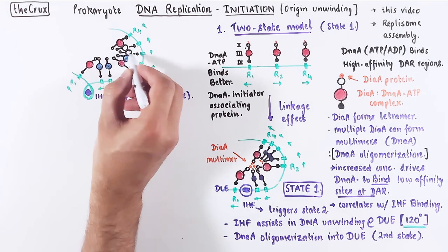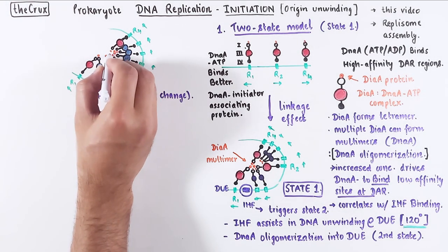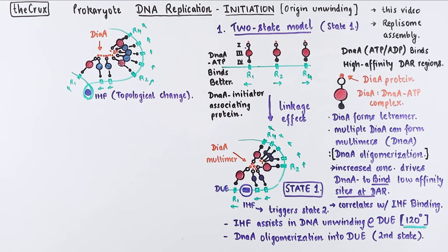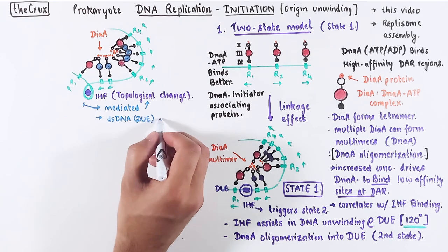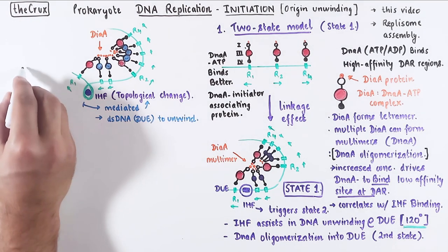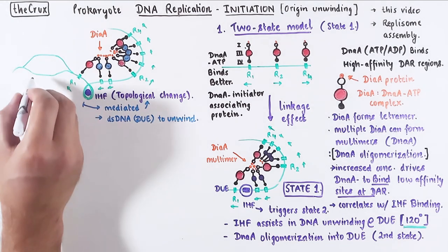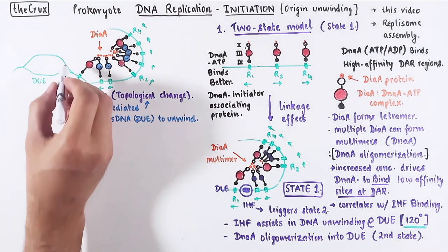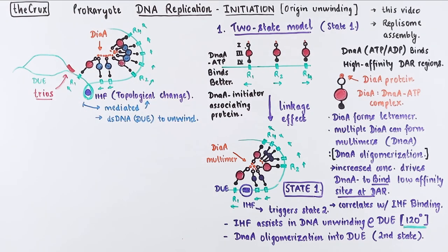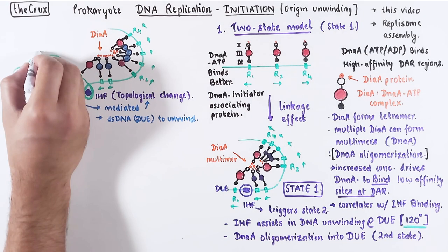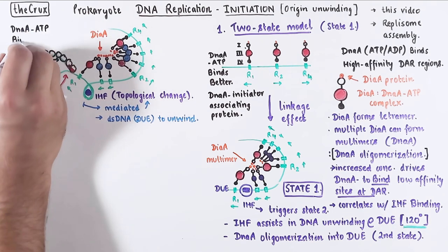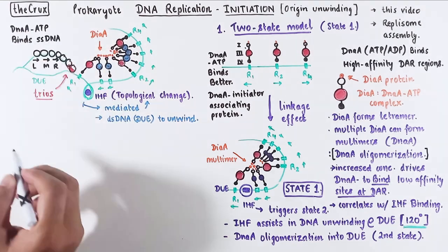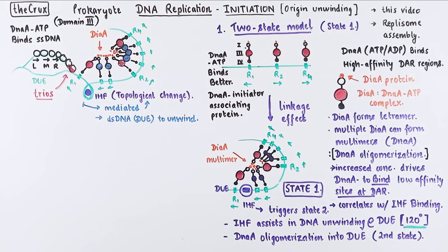Because DAR is stably bound by DnaA proteins, it is really difficult to unwind the DAR. So the IHF-mediated topological change unwinds the DUE region, since it is not bound by any proteins. And also, that DUE is very AT-rich, so it is easier to unwind. Now keep in mind that there is a triose region that overlaps a bit with the DUE. So the triose and the LMR repeats become exposed as single strands of DNA after unwinding. And these become the target of binding by the DnaA ATP molecules, by the domain 3.